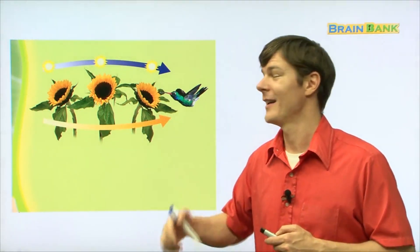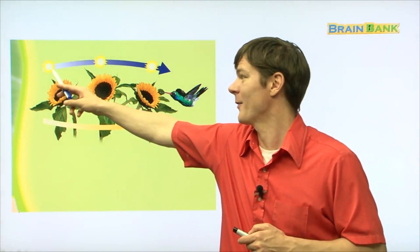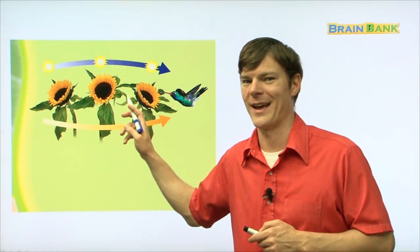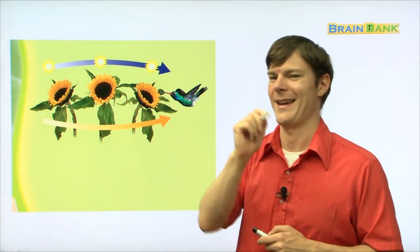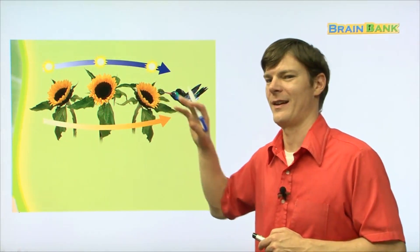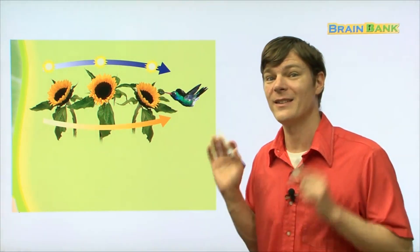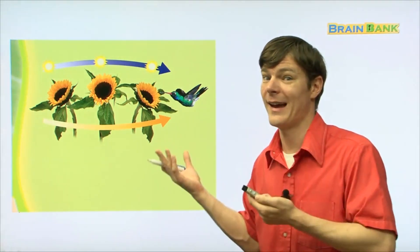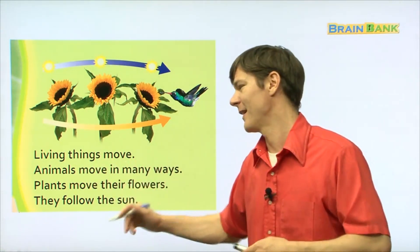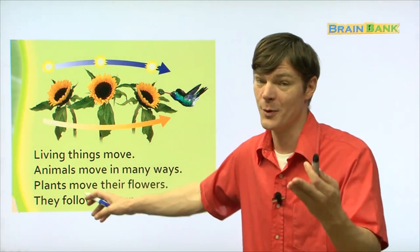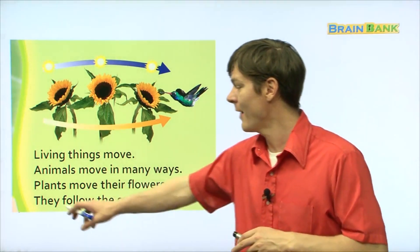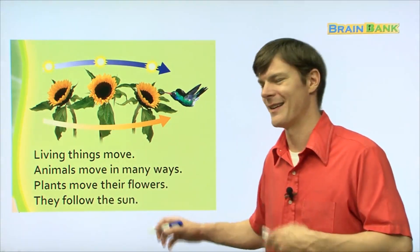Just like we move, plants and animals also move. Here you can see the sun. Look right here. It's going from here to here to here. And then, so is this flower. This sunflower. Do you know what sunflower is in Korean? Hebaragi. Very good. So the sunflower moves like this. It follows the sun. And this, right here, this bird is called a hummingbird. It's also moving. It's flapping its wings and it's flying. Living things move. Repeat with me. Living things move. Animals move in many ways. Animals move in many ways. Plants move their flowers. Plants move their flowers. They follow the sun. They follow the sun. Very good.